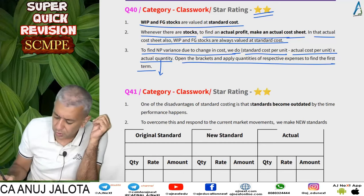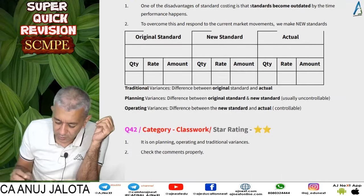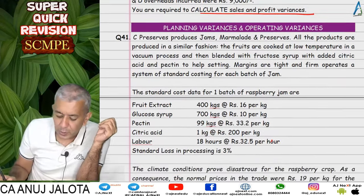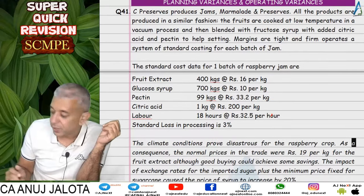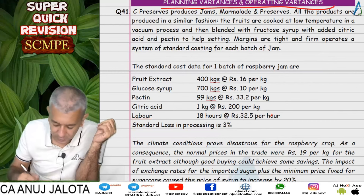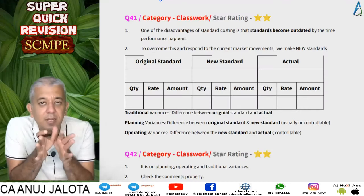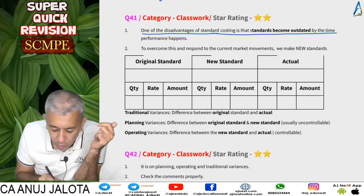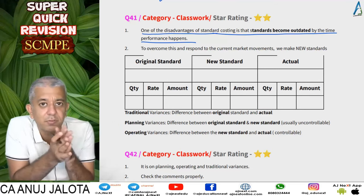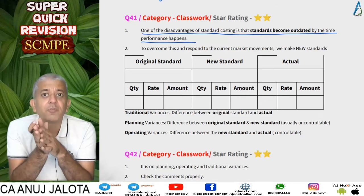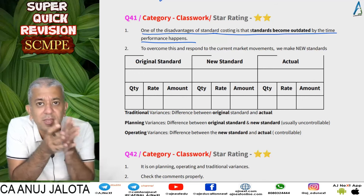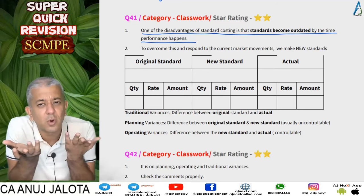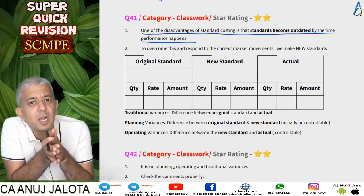From question 41 onwards we started a new series aimed at identifying one of the difficulties in following standard costing and how to overcome it. Usually, standards are drafted on the first day. One disadvantage is that standards become outdated by the time performance is measured, because so many changes occur during the year. For example, when Jio came, all of Vodafone's standards would have gone for a toss.